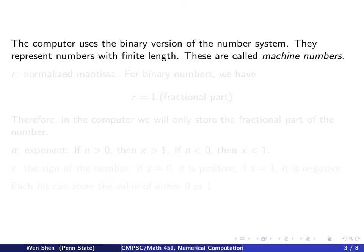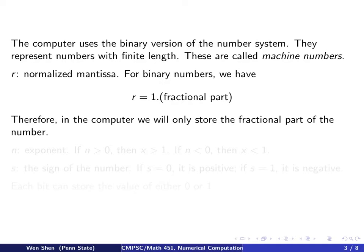The computer uses binary numbers and represents them with finite length, because there is a limited amount of memory for each number. We call these machine numbers. For binary numbers, the value r — called the normalized mantissa — lies between 1 and 2, so it is always one point something. Since the integer part is always 1, there is no need to store it. Therefore, in the computer, only the fractional part is stored.